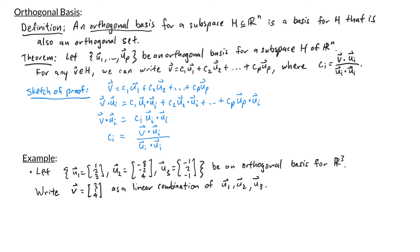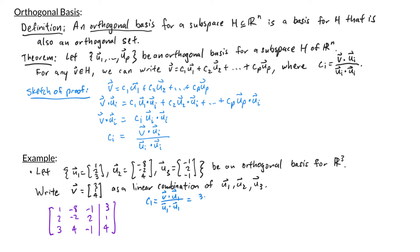We want to write v = (3, 1, 4) as a linear combination of u1, u2, u3. Using the formula, c1 = (v·u1)/(u1·u1) = (3·1 + 1·2 + 4·3)/(1² + 2² + 3²) = (3 + 2 + 12)/(1 + 4 + 9) = 17/14. Similarly, c2 = (v·u2)/(u2·u2) = (3·(-8) + 1·(-2) + 4·4)/((-8)² + (-2)² + 4²) = (-24 - 2 + 16)/(64 + 4 + 16) = -10/84.